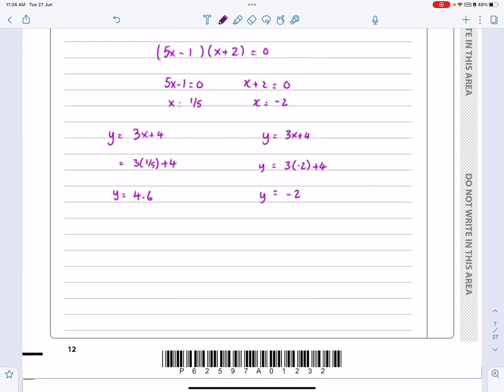And then just put everything together. So I've got x = 0.2, y = 4.6 - there's one pair of answers. Or x = -2, y = -2 - there's the other pair.